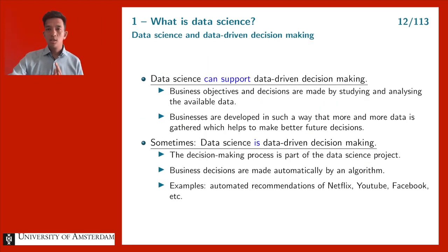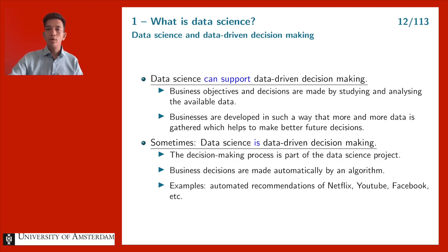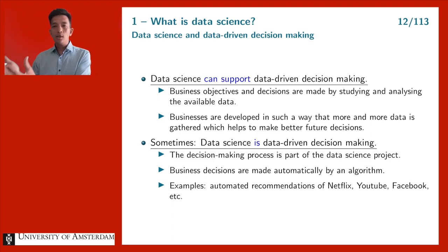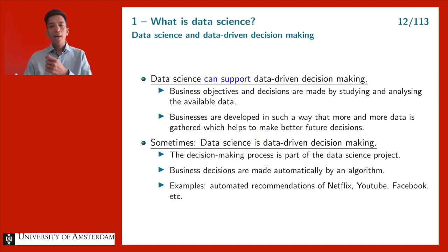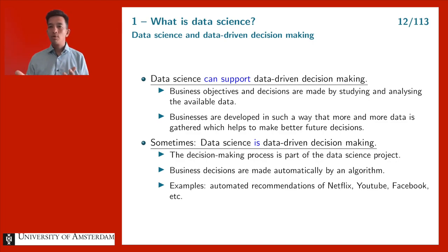Data science is different from data-driven decision making. Data science is a science — we are trying to understand the world by analyzing data. Data-driven decision making is decision making — we are trying to solve a problem. However, often data science supports data-driven decision making. You start with a data set, use data science methods to extract knowledge from it, but that knowledge then has to turn into a decision. An expert may look at the results and add context, or a board discusses and decides — so data science is part of the decision making process but not 100% of it.